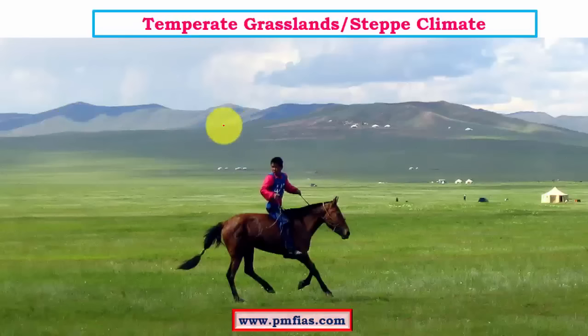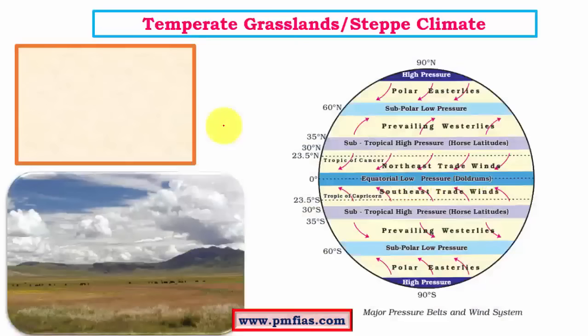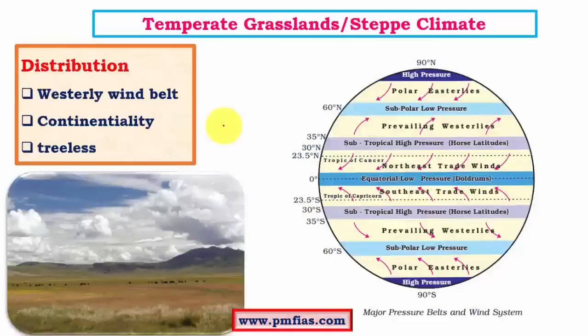This is what a typical temperate grassland region looks like. The distribution of this climate is mainly affected by two factors: continentality and the rain shadow effect. Continentality along with rain shadow effect mainly influence the climatic conditions of the steppe or grassland type of climate.